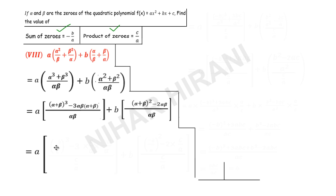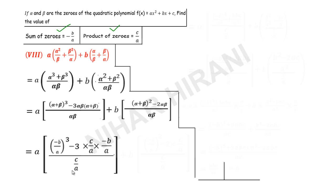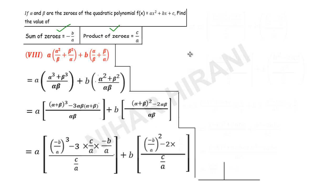Now let's substitute the known values. Alpha + beta = -b/a, whole cubed. Minus 3 times alpha·beta = c/a, times alpha + beta = -b/a. In the denominator I write c/a because alpha·beta (product of zeros) is c/a. Then for the other part: alpha + beta = -b/a, squared, minus 2·alpha·beta = c/a, and in the denominator also c/a because alpha·beta = c/a.